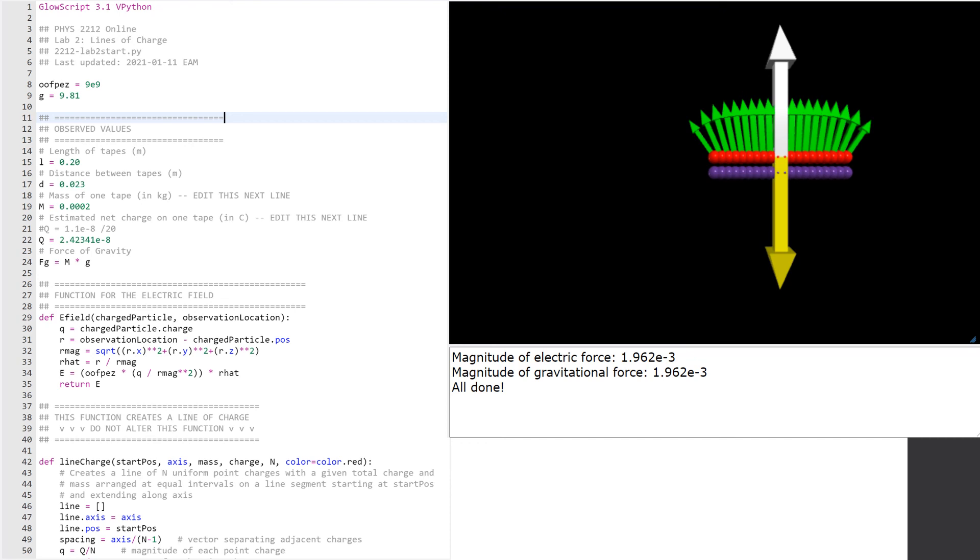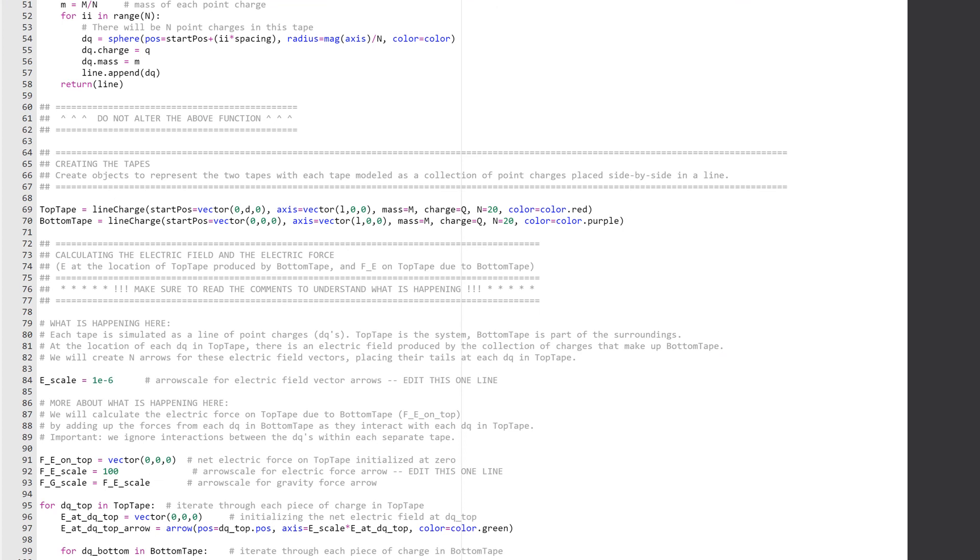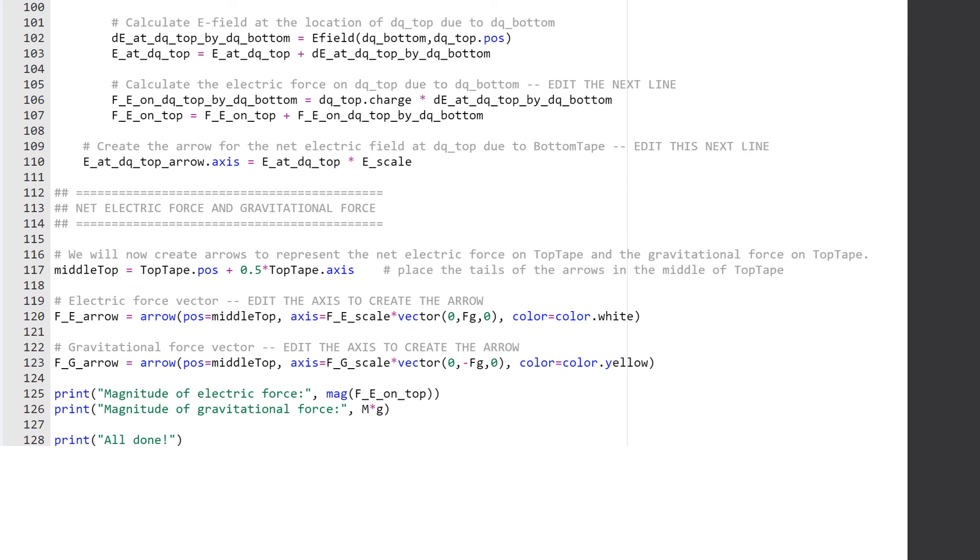And now going into this coding, we can see that our charge for the tape we determined to be 2.432341 times 10 to the negative 8 coulombs. And basically we did this by going over the entire code of determining what the charge and the electric force and the gravitational force would be. And knowing that they were equal to each other, you could go back and type in different values to figure out what the most accurate charge would be.